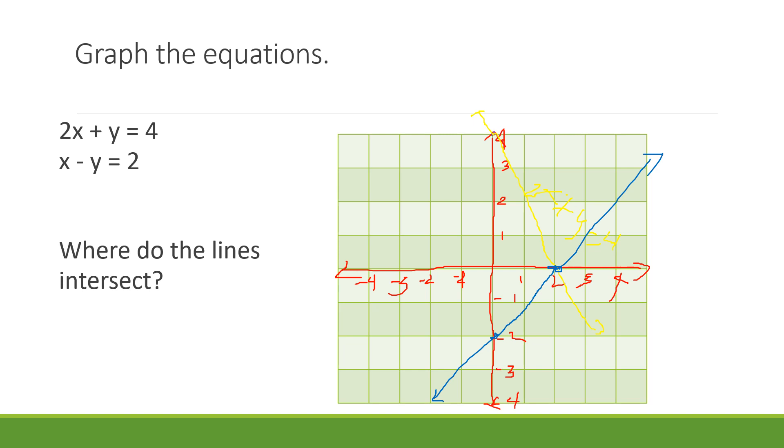So that means our solution is (2, 0), because it's in the x-axis. So this is our solution. Where do the lines intersect? In the x-axis, at (2, 0).